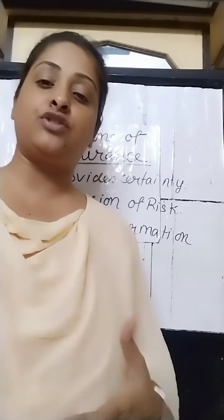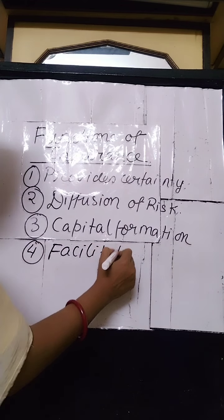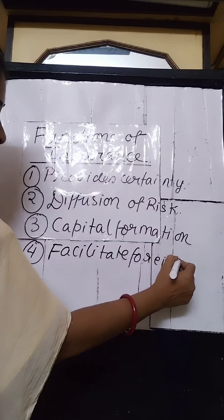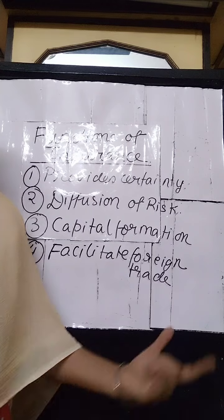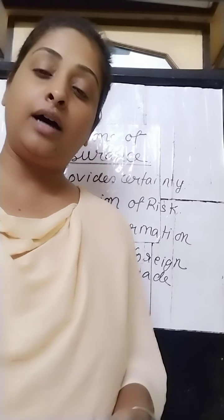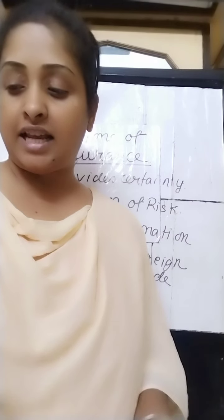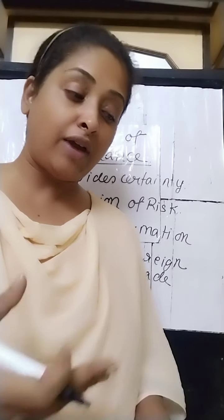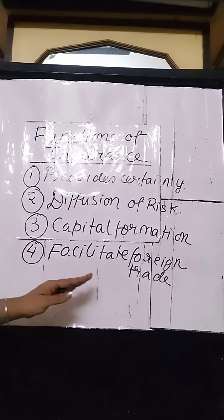The next function is to facilitate foreign trade. Heavy risks are involved in sending goods from one country to another — that is called export. Whenever there is an export through waterways or airways, there is always a risk of loss. Insurance facilitates imports and exports by providing protection against such heavy risks that may occur in transit, thereby also helping foreign trade.